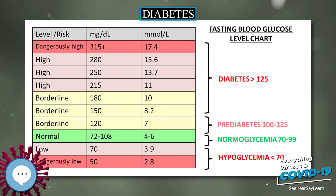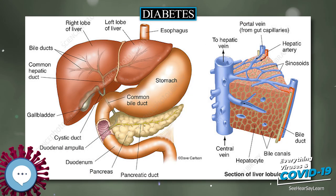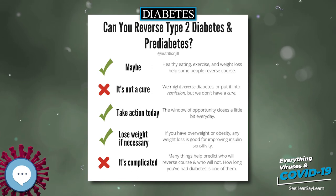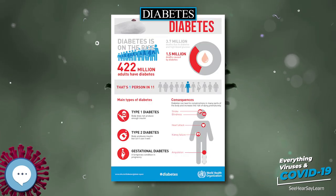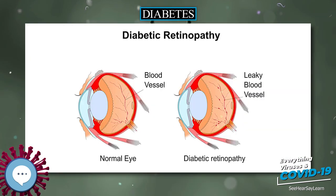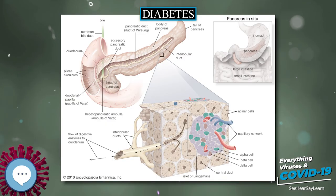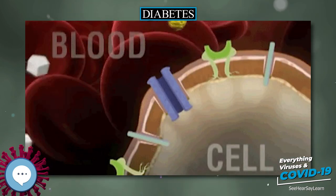Inhalable insulin has been developed. The original products were withdrawn due to side effects. Afreza, under development by the pharmaceuticals company Mankind Corporation, was approved by the United States Food and Drug Administration (FDA) for general sale in June 2014. An advantage to inhaled insulin is that it may be more convenient and easy to use. Transdermal insulin in the form of a cream has been developed and trials are being conducted on people with type 2 diabetes.